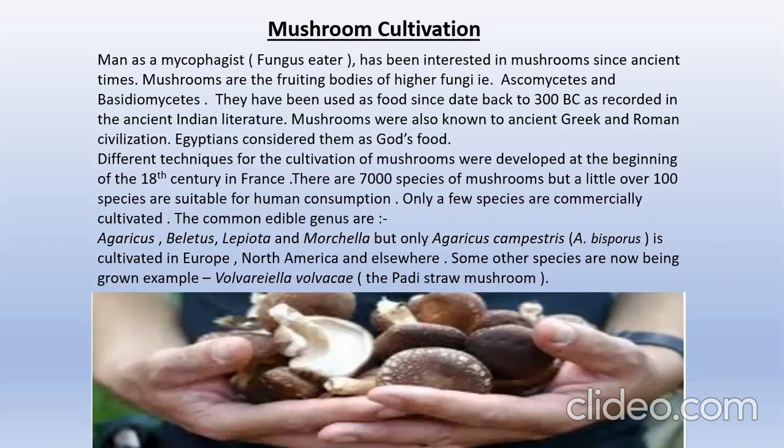A little over 100 species are suitable for human consumption, but only a few species are commercially cultivated. The common edible genera are Agaricus, Boletus, Lepiota, and Morchella. But only Agaricus campestris, also called Agaricus bisporus, is cultivated in Europe, North America, and elsewhere. Some other species are now being grown — for example, Volvariella volvacea, the paddy straw mushroom.